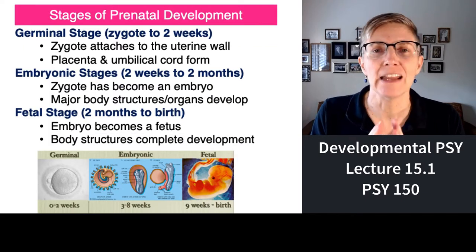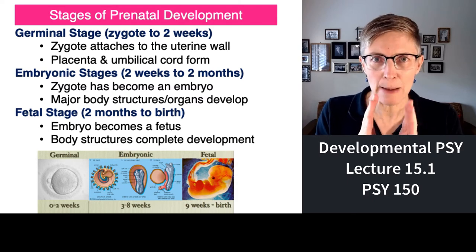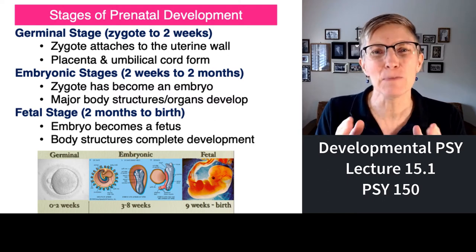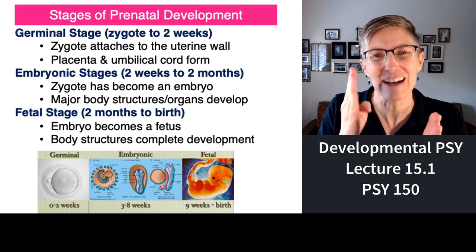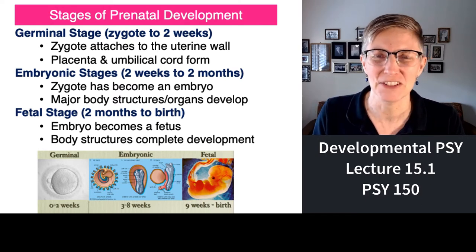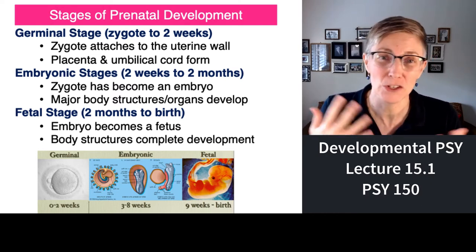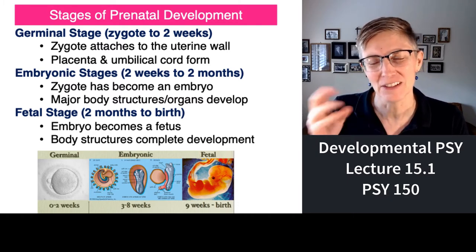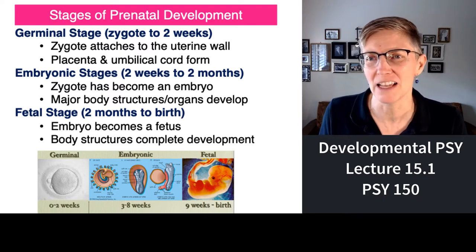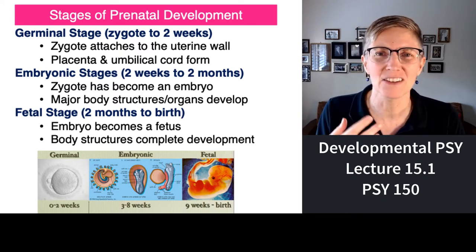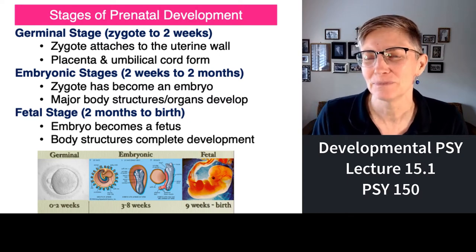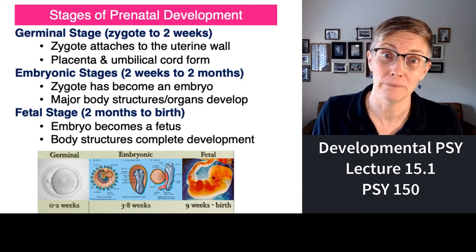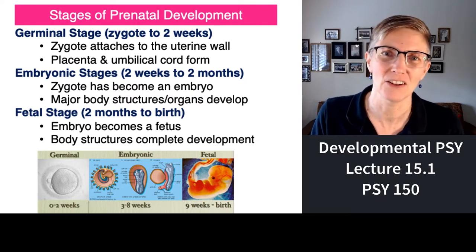Let's start with prenatal development. Within that period — typically nine months — developmental psychologists cut prenatal development into three more phases. The first phase is called the germinal stage. It's basically when you were just a single cell, called a zygote, until you developed into a little blob of cells. It's during this stage that the placenta and the umbilical cord form, which are important since that's how you get your nutrition.